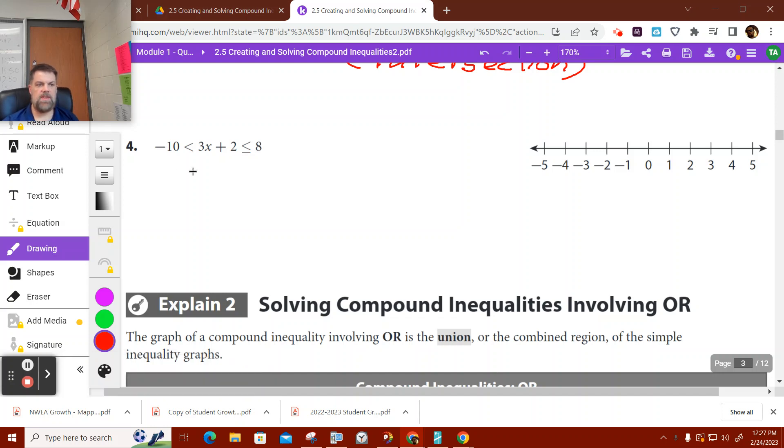So let's do the same thing. I'm going to subtract 2 from both sides, all three sides, actually. When I do that, I'm going to get negative 12 over here is less than 3x is less than 6.